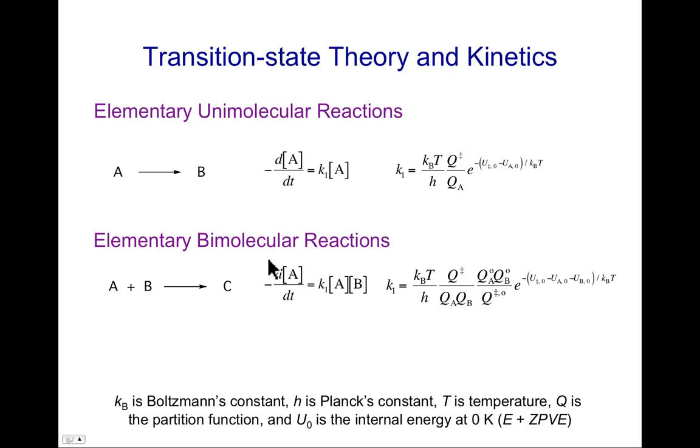For a bimolecular reaction, we would have A plus B goes to C. And again, a way to monitor the rate would be the disappearance of A, for example. And of course, incidentally, in both of these reactions, just by stoichiometry, the rate of disappearance of A is equal to the rate of appearance of B. And the same is true here.